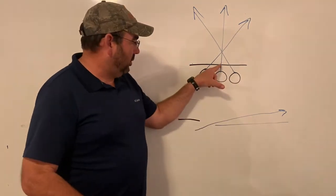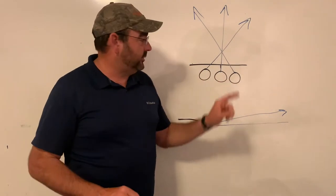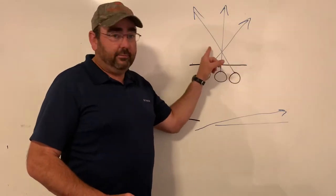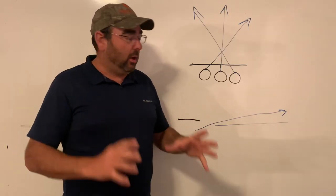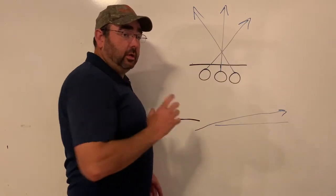Traditionally bunker trap shooters hold at the top of the house. They look right above the house so that way they can pick up these targets when they come out fast.